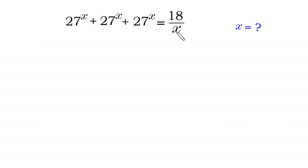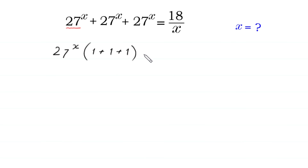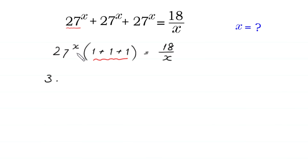First of all, we factor out 27 to the power x. With 27 to the power x as a common factor, we get 27 to the power x times (1 plus 1 plus 1) is equal to 18 over x. Since 1 plus 1 plus 1 equals 3, we have 3 times 27 to the power x is equal to 18 over x.